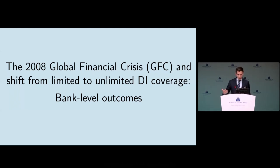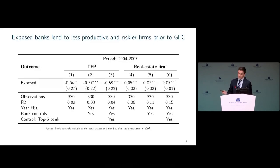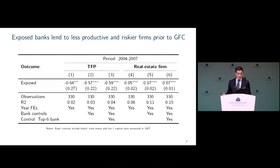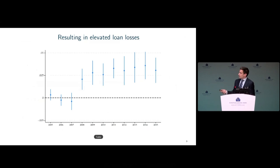In the period between 2004 and 2007, prior to the financial crisis, these more exposed banks tended to differentially lend to less productive firms and to firms in real estate and construction — a measure of credit risk since that sector crashed during the crisis. These banks experienced substantially higher loan losses relative to other banks as soon as the global financial crisis started to break out. This is motivating evidence on the asset side of these banks' balance sheets.